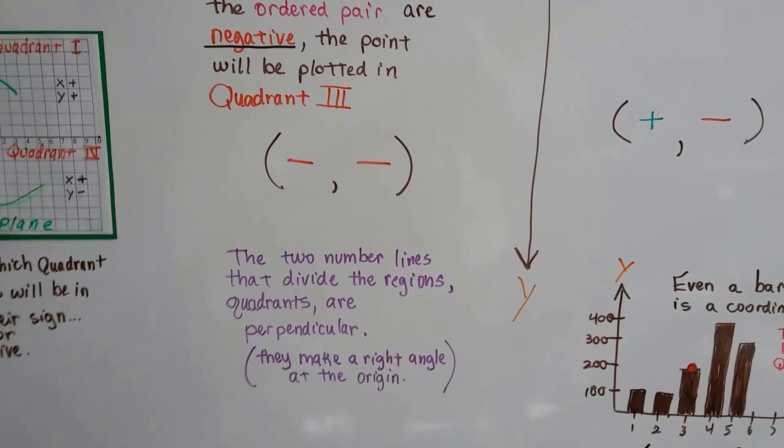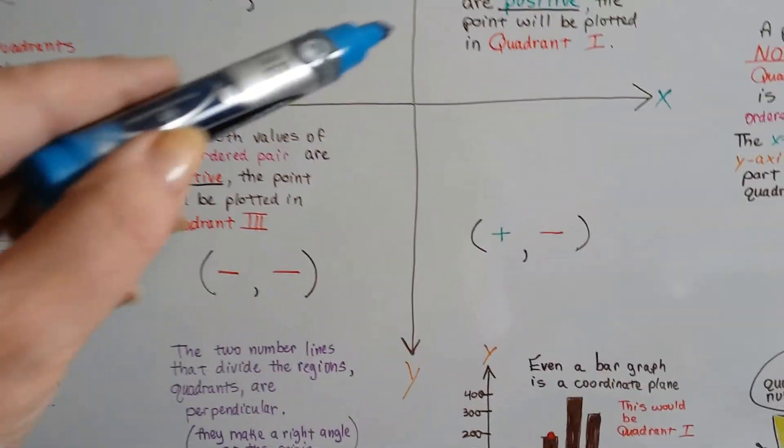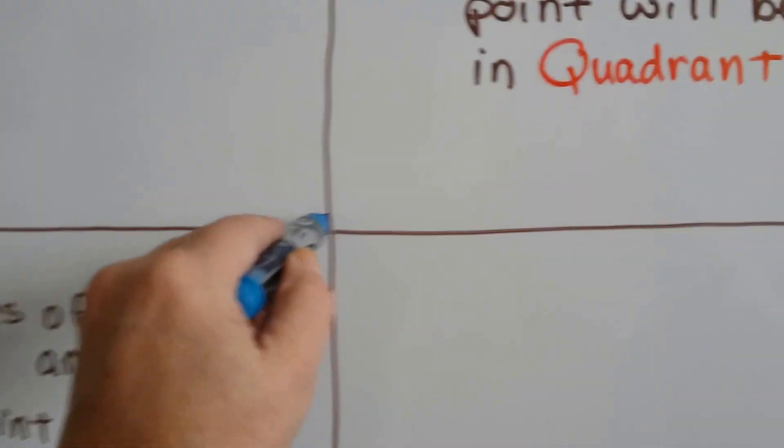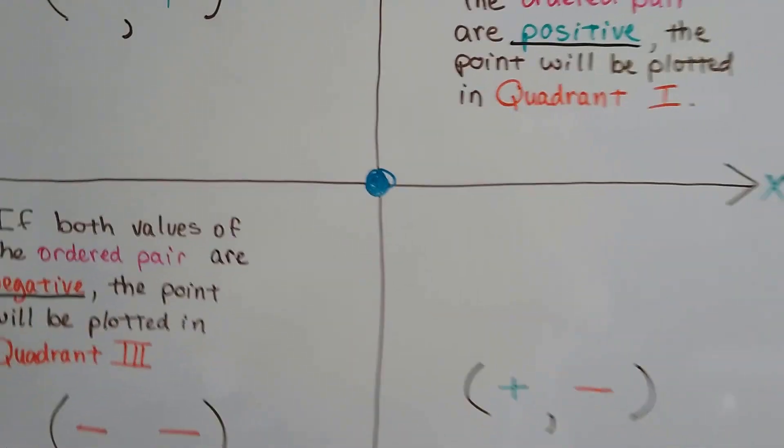And the two number lines that divide the regions, the quadrants, are perpendicular. They make a right angle right here at the origin. Because the center part is the origin, isn't it? Right here. It's zero for y and zero for x. Okay?